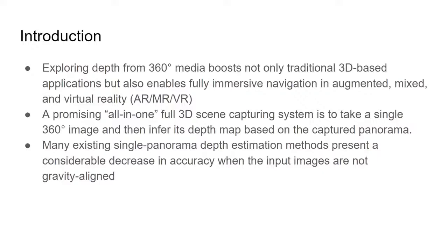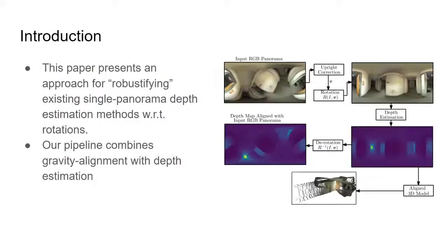A really promising way of doing this is by capturing a single spherical image and then using it to infer its depth map. However, many of the existing single panorama depth estimation methods present a considerable decrease in accuracy when the camera is tilted at the moment of capture. In this paper, we present an approach to make existing single panorama depth estimation methods more robust.